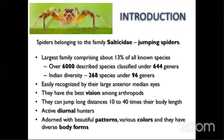Salticids are commonly known as jumping spiders, belonging to the family Salticidae. It is the largest spider family, comprising about 13% of all known species. There are about 48,000 described spider species, of which over 6,000 are jumping spiders belonging to Salticidae. We have about 644 genera known worldwide. For Indian diversity, about 268 species are known, classified under 96 genera.